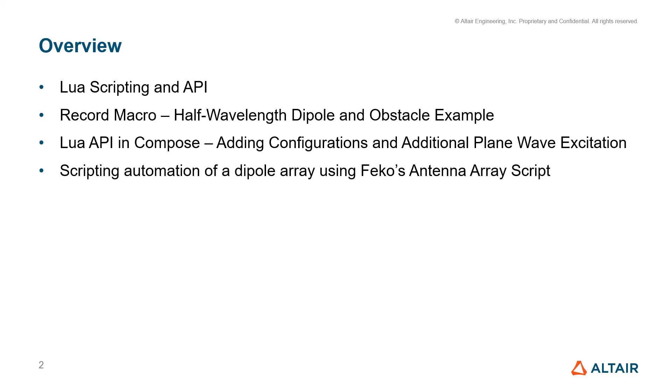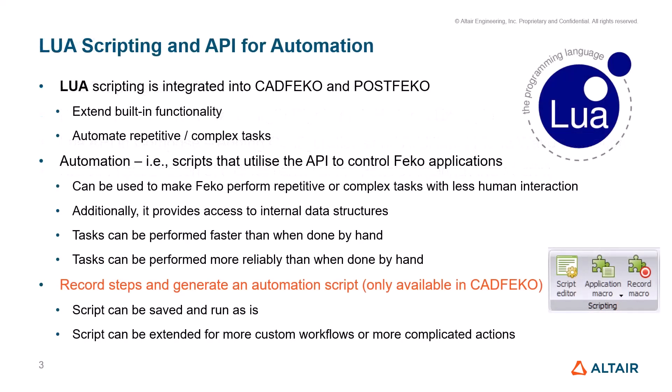LUA scripting is fully integrated in both CAD FICO and post FICO, so it automates repetitive and complex tasks. Automation scripts utilize the LUA API to control different FICO applications and can perform these tasks with less human interaction. Some tasks can be performed faster than when done by hand and more reliably. We also have a record macro feature which generates a script based on manually performing actions, which can then be saved and run as-is or extended and modified for more custom workflows.